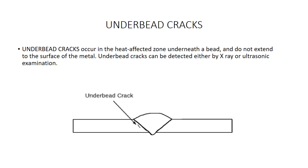Under bead cracks occur in the heat affected zone underneath a bead and do not extend to the surface of the metal. Under bead cracks can be detected by x-ray or ultrasonic examination. These cracks can't be seen from the surface because they're under the bead, so the best way to find them is generally using volumetric examination methods — x-ray or ultrasonic will generally find these types of cracks.